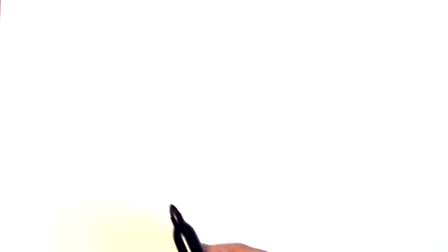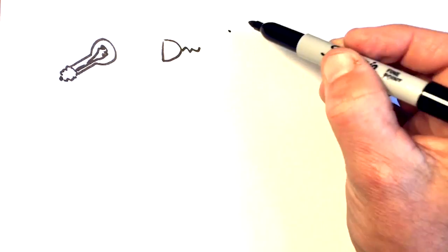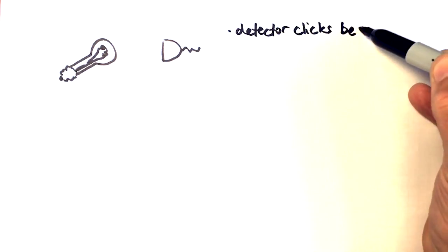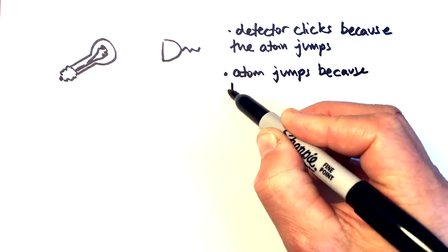Now returning to our original question, where we have an atom in the excited state and a single photon detector. Now does the detector click because the atom jumps? Or does the atom jump because the detector clicks?